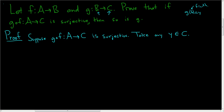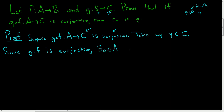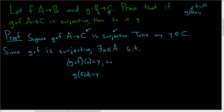Now, C happens to be the codomain of g∘f, and g∘f is a surjection. So since g∘f is surjective, there exists some little a in capital A such that g∘f of little a is equal to y. But this can be written as g of f of a equal to y. And f of a is in B, because f takes A to B. So set little b equal to f of a, and that's in capital B.